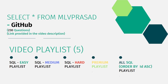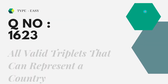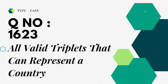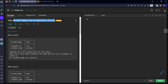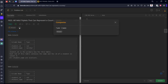Let's see the question we are trying to solve today. It is question number 1623: All Valid Triplets That Can Represent a Country. It is already asked in Amazon.